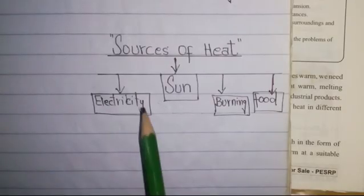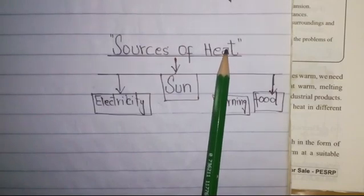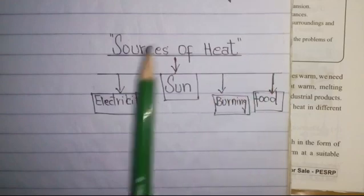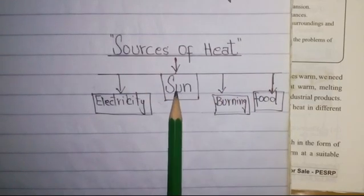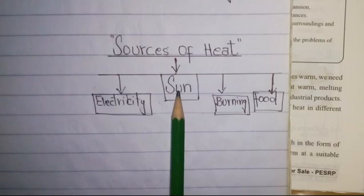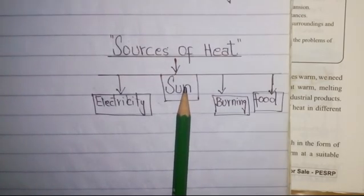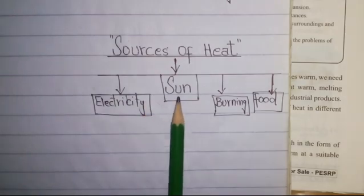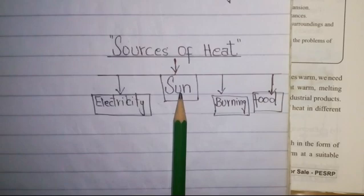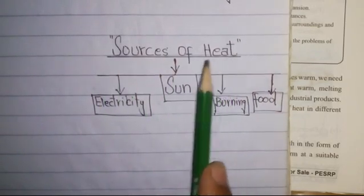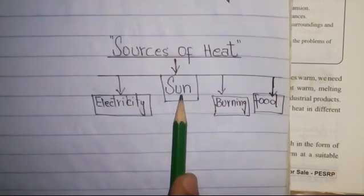When we talk about the sources of heat, the first thing that comes to mind is the sun, because the sun is the major source of heat and light. We have already learned this in previous classes — in 6th class and 7th class — we already know that the sun is the major source of heat and light. So at number one, it's the sun.